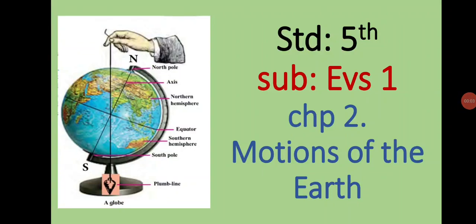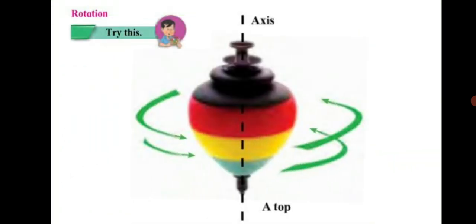Standard 5th Subject EBS Chapter 2: Motions of the Earth. Dear students, you have already come across the concept of rotation, so let's revise. The top turns around itself. Any object that turns about itself actually turns around a certain imaginary line. The turning of an object around itself is called rotation, and the imaginary line around which it rotates is called the axis of rotation. Now that you know about rotation, let's learn about the Earth's rotation.